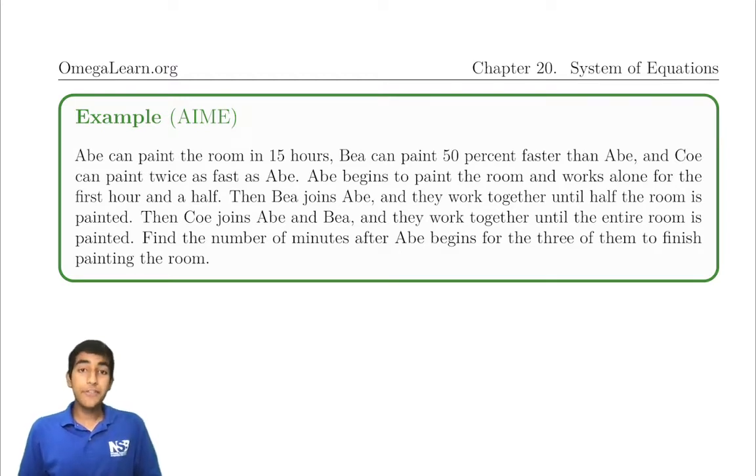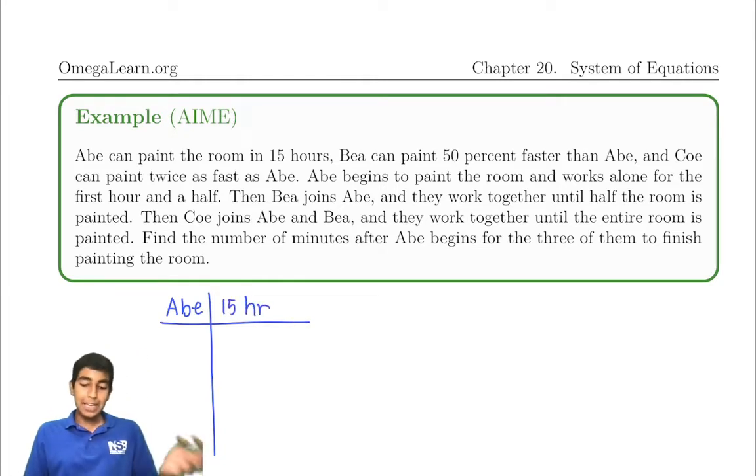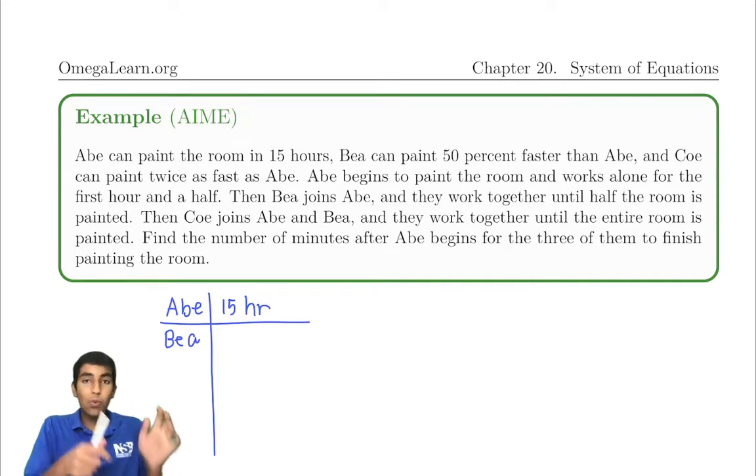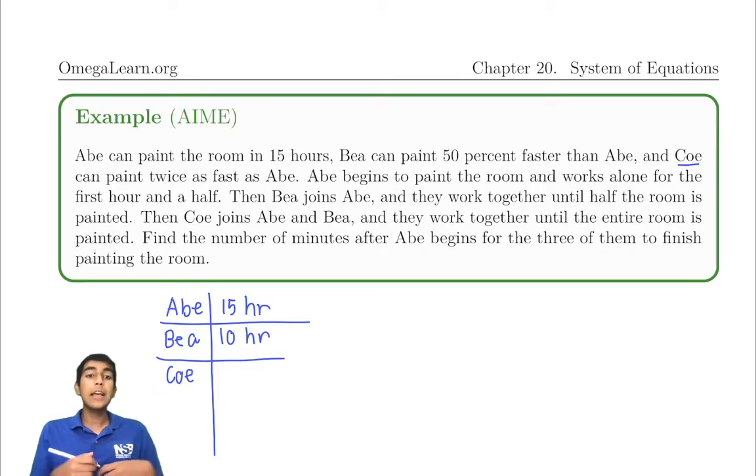Abe can paint the room in 15 hours. Let's make a little table here. Bea can paint 50% faster, so we'll take two-thirds of time because it's working 1.5 times faster. So two-thirds of 15 is 10. Bea can paint it in 10 hours. Coe is two times faster than Abe, so can paint it in 7.5 hours, half of the 15 hours.